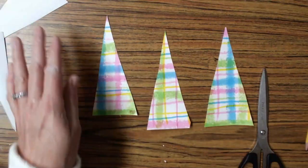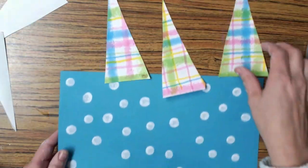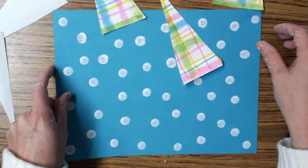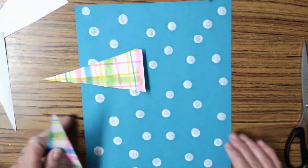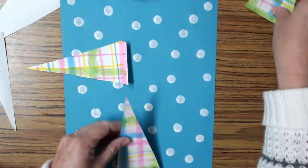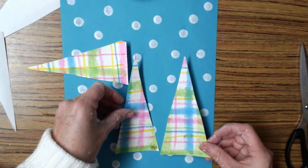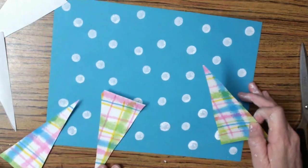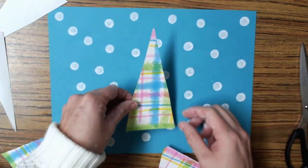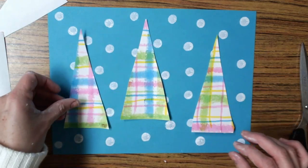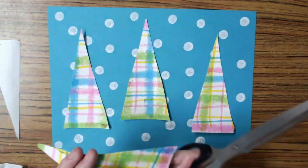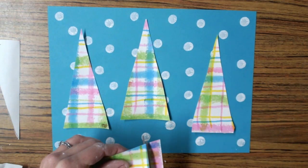Now that you have your three trees cut out, take a look at them. The last thing that we're going to need is some tree trunks. I like to lay my trees out on my background to decide how I want them to go. Do I want to hold my paper vertically, or will the trees not fit? Or do I want to turn it horizontal so that all of the trees can fit?